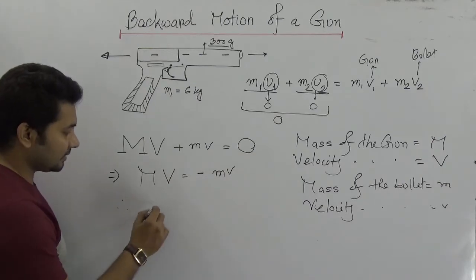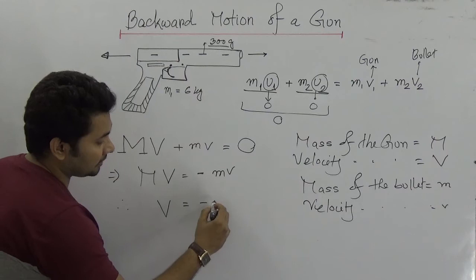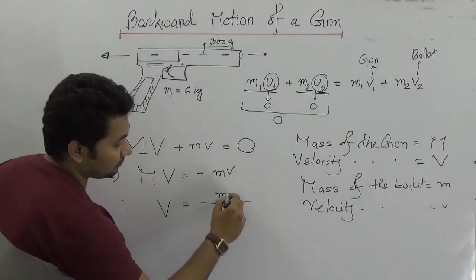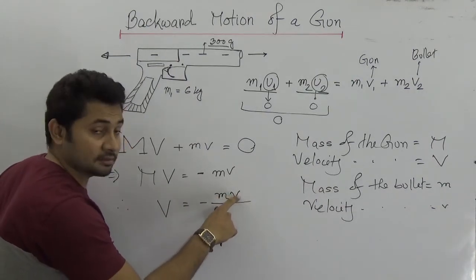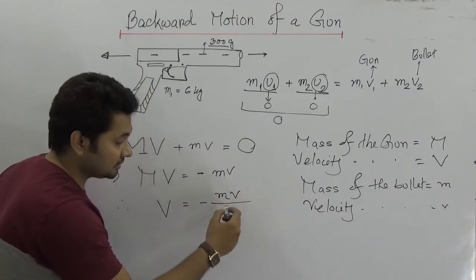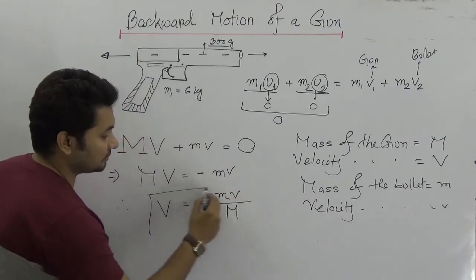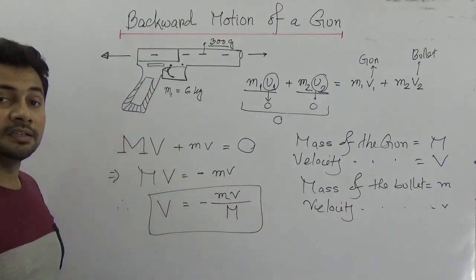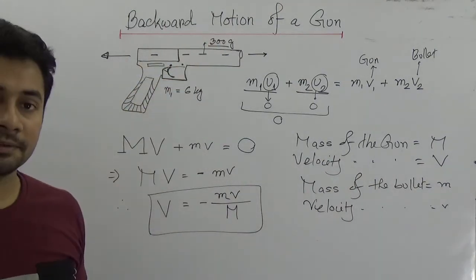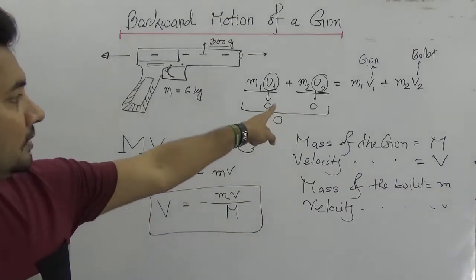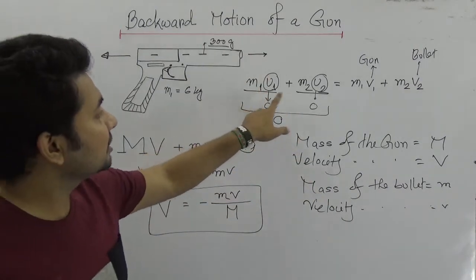So we can say V is equal to minus (m·v) / M — that is, the mass of the bullet times the velocity of the bullet, divided by the mass of the gun. This is the equation we can use in the case of the backward motion of the gun. This is the law of conservation of momentum.